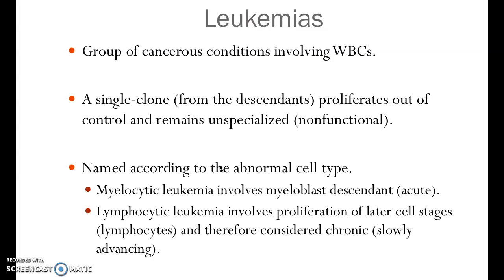But with leukemia, it's unique — it's in your blood, so it's all throughout your body. It's the different white blood cell lines that get affected with a mutation. It's just one single clone that gets mutated, and from that point on, all of that clone's descendants proliferate out of control. Typically these cells are completely non-functional because they get released into the blood before they can mature and become specialized.